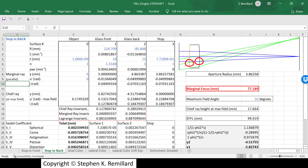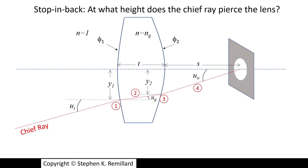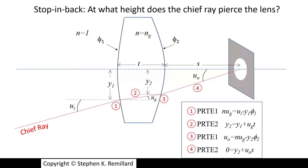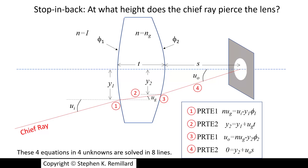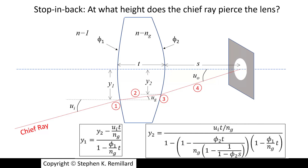What we know is that the chief ray goes to the center of the stop. What we don't know is the heights of the chief ray at the front and rear surfaces of the lens. The chief ray comes in, hits the lens at point one, refracts, transfers to point three, refracts again, and goes toward the optic axis. We know U_i (the incoming field angle of 10 degrees), the geometry of the lens, and S (the distance to the stop). Writing paraxial ray-trace equations at each refracting point and for each transfer gives four equations and four unknowns, which in about eight lines of algebra yield Y1 and Y2. The expression for Y2 is broken into intermediate steps in the spreadsheet cells i19, i20, i21, and then Y2 in cell i22.